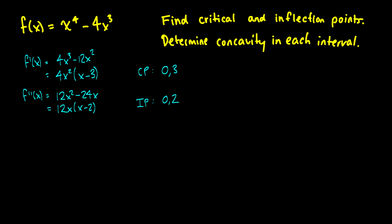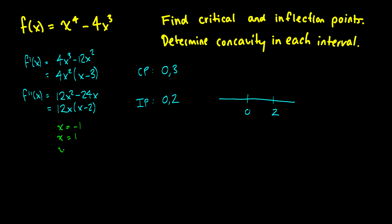Now we can determine concavity just like we would for increasing and decreasing, using the inflection points 0 and 2. We check values: at x = −1 we get a positive value, so concave up; between 0 and 2 we get a negative value, so concave down; and after 2 we get positive values, so concave up again. It is concave up on (−∞, 0) and (2, ∞), and concave down on (0, 2).